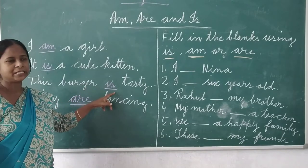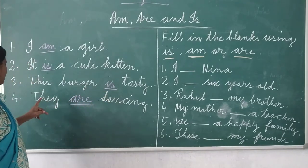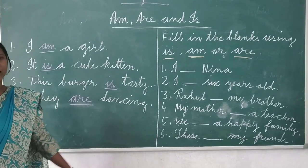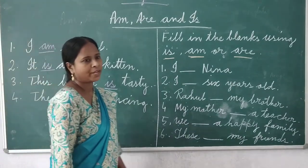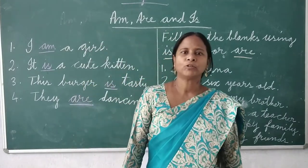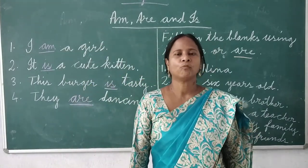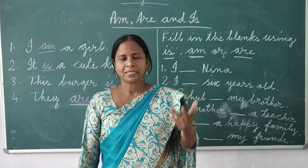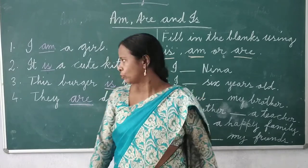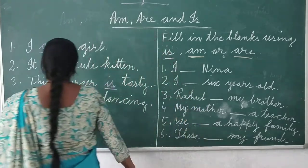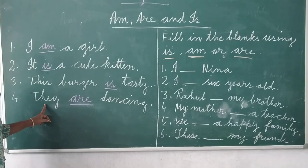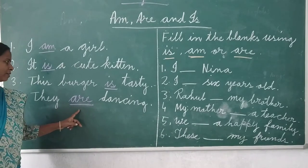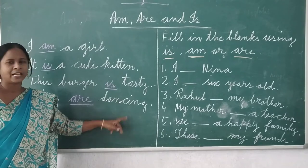Next: they are dancing. We use 'are' when we talk about more than one person, thing, animals, or places. So here, 'they' means more than one person, and after 'they' we use 'are'. They are dancing.